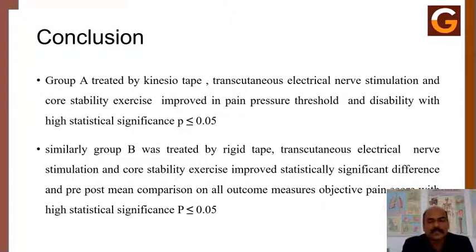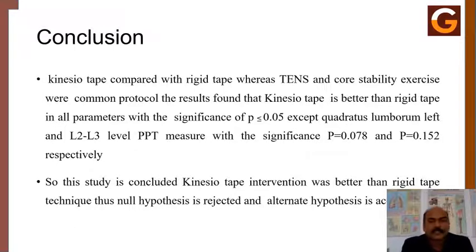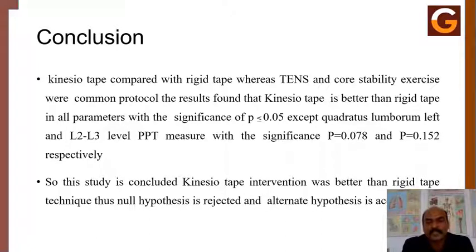In conclusion, Group A treated with kinesio tape, transcutaneous electrical nerve stimulation (TENS) and core stability exercises improved significantly in pain pressure thresholds, with p ≤ 0.05. Group B treated with rigid tape also showed much improvement individually at p ≤ 0.05. However, when kinesio tape was compared with rigid tape — with TENS and core stability exercises as common protocols — kinesio tape was better than rigid tape in all parameters at p ≤ 0.05, except at quadratus lumborum left and L2–L3 levels. Therefore, all null hypotheses were rejected and the alternative hypothesis was accepted.